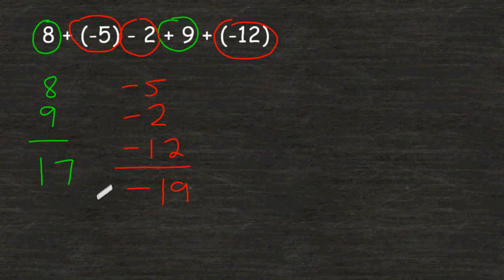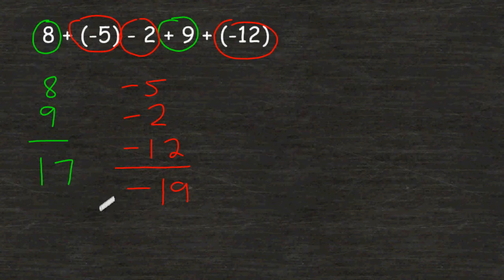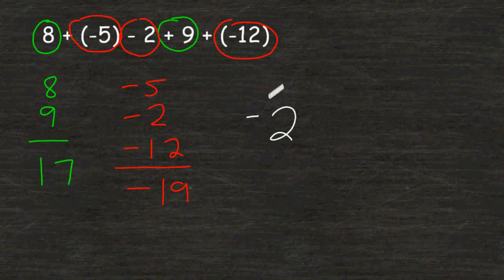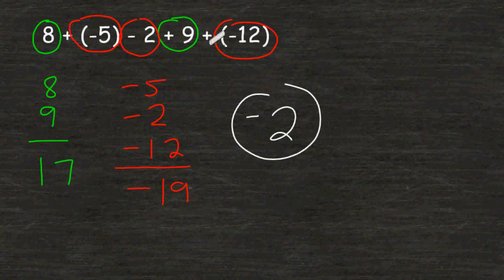Now, after we get our total number of positives and our total number of negatives, we have to notice that these are different signs. So we have to find the difference of their absolute values. The difference between 19 and 17 is 2. And because we have more negatives, our answer must be negative. We can say that in this expression, we have two more negatives than we have positives.